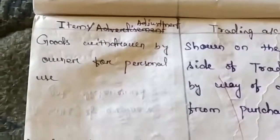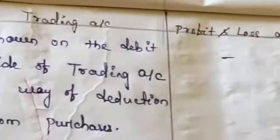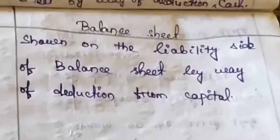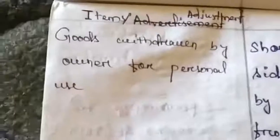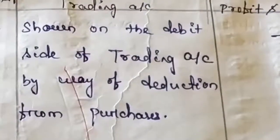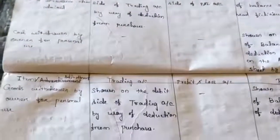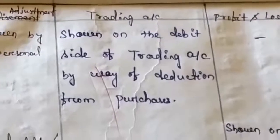Goods withdrawn by owner for personal use: the first treatment is shown on the liability side of the balance sheet by way of deduction from capital, since drawings reduces capital. The second treatment: since goods are withdrawn, it is shown on the debit side of the trading account by way of deduction from purchases. If cash is withdrawn, reduce from cash; if goods are withdrawn, reduce from purchases in the trading account.